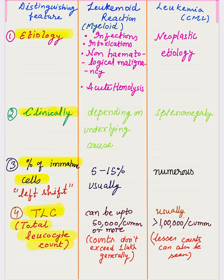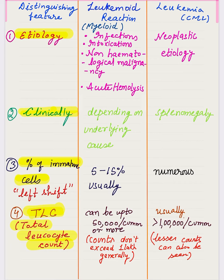On the other hand, chronic myeloid leukemia has a neoplastic etiology. There is a reciprocal translocation between chromosome 9 and 22, which results in tyrosine kinase formation, causing proliferation of immature myeloid precursors. This is a neoplastic process with proliferation of myeloid precursors that remain immature — there is lack of maturation — whereas in leukemoid reaction, there will be maturation of the myeloid precursors.